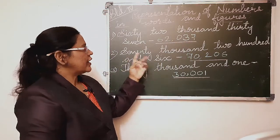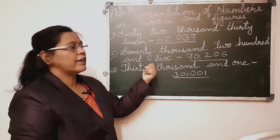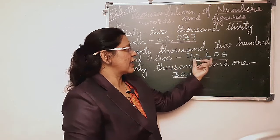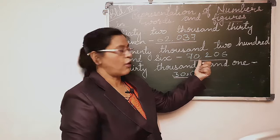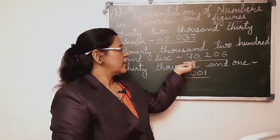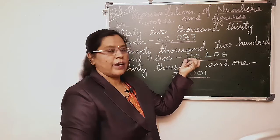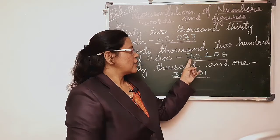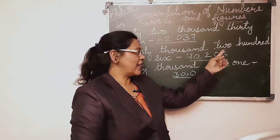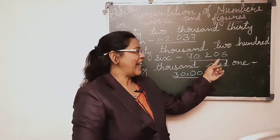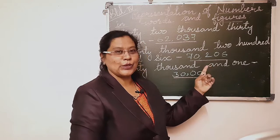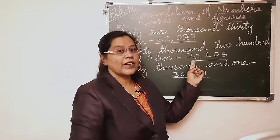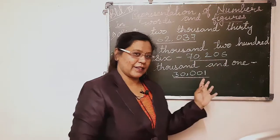The second one is 70,206. By standard form we have written the number in figures: seventy thousand, comma, two hundred and six. It means we have only 70,000 — there is no thousands value. There are 200s, and only the units place is given to us, which is six. No tens value is given. So it is 70,206.